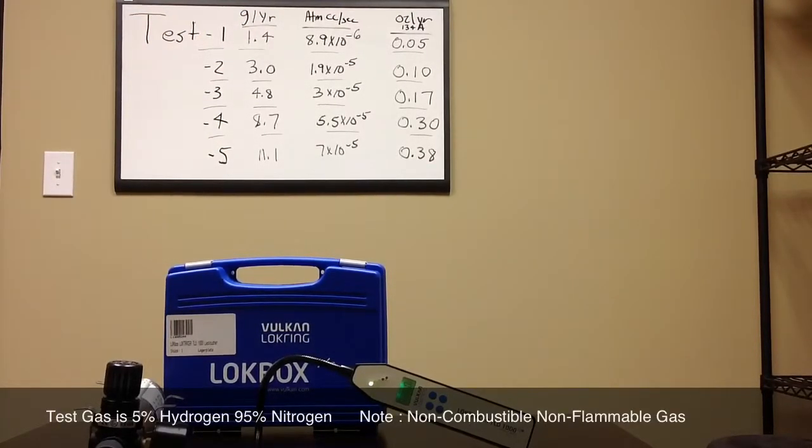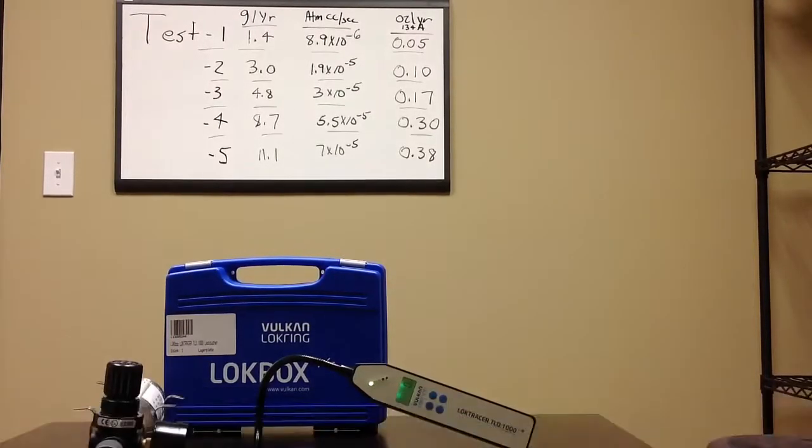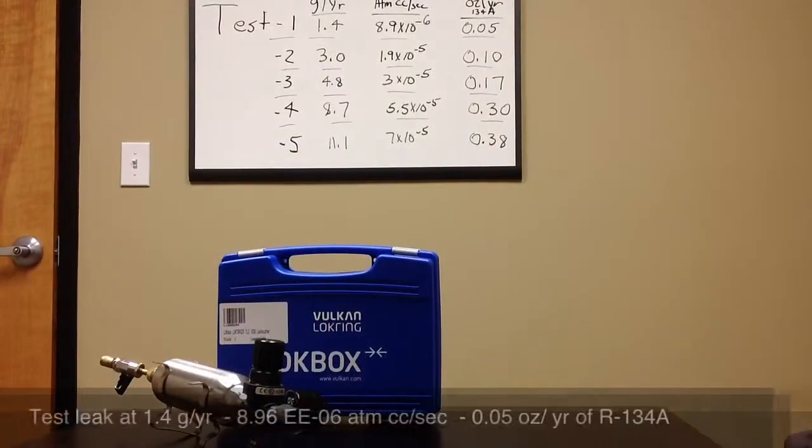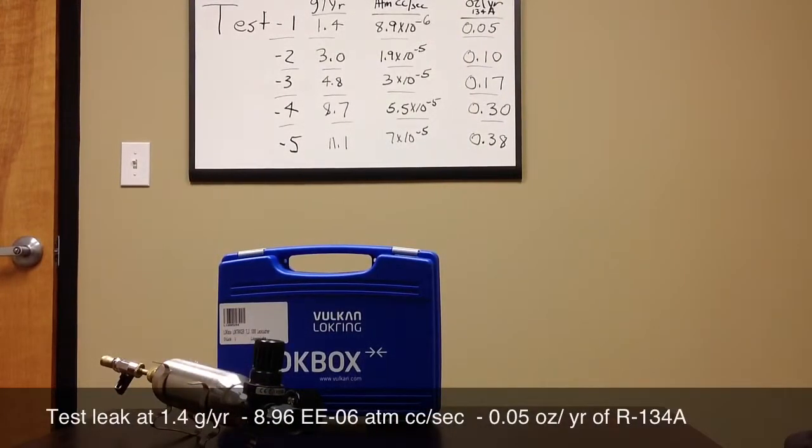So that's a very small leak and we'll progress as we see down the way here. Let's get started. Our first test will be at 1.4 grams per year, that is 8.9 times to the minus 6 atmospheric cc's or 0.05 ounces per year R134A.